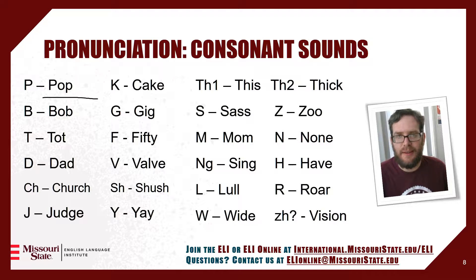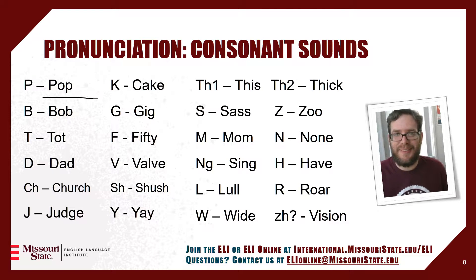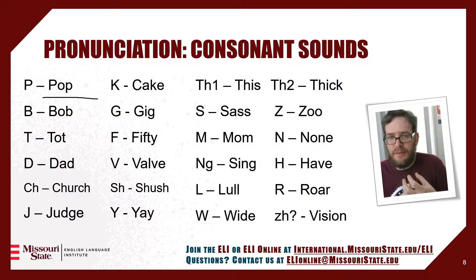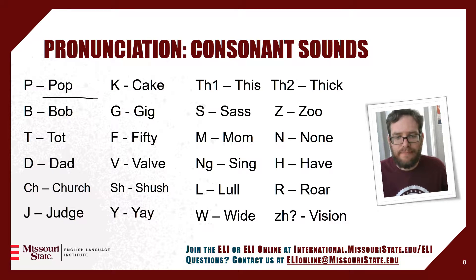H is another sound — some people pronounce it very clearly, others don't. Say it with me: have. Then we have L — your tongue needs to touch your teeth: low. R, especially in American English, is very interesting and difficult for many people. At the beginning of a word, your tongue touches the sides of your teeth: R. In the middle or at the end of a word, your tongue will curl back: R. So for 'roar,' your tongue has to move a lot — at the beginning you push it against the sides of your mouth, and at the end you pull it back: roar.